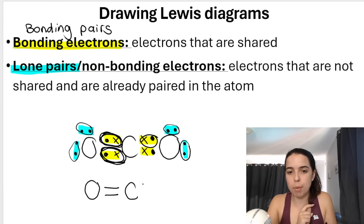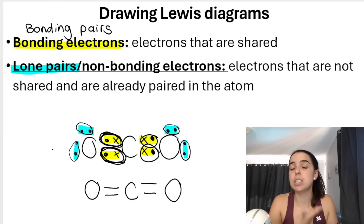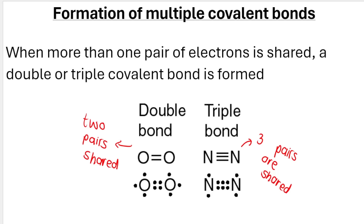In a Kekulé structure we represent each bonding pair with a line — so one pair equals one line (one bond). For carbon dioxide CO2, there are two double bonds. This leads us to the formation of multiple covalent bonds: if two pairs are shared it's a double bond, and if three pairs are shared it's a triple bond.